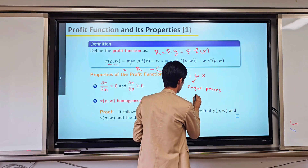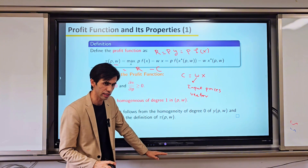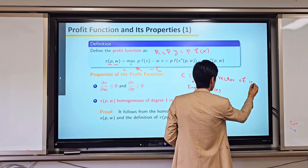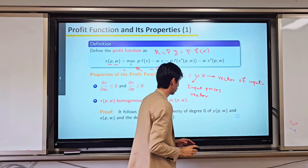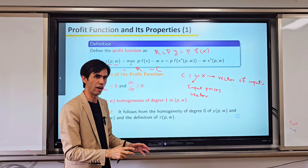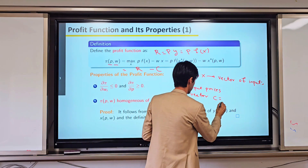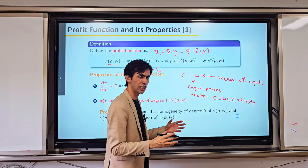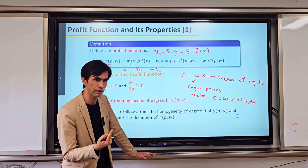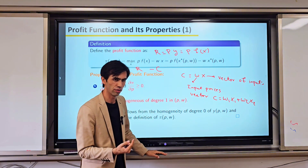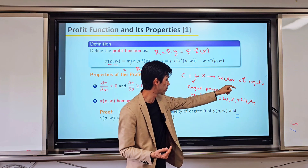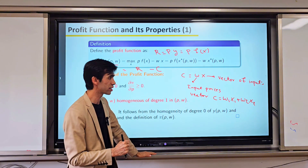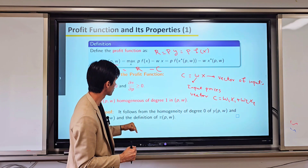Here w is a vector of input prices and x is a vector of inputs. For example, when we have two inputs in our production process, cost takes the format w₁x₁ + w₂x₂. But in general, if we assume we have n inputs, we write it as the vector product w·x, where w is the vector of input prices and x is the vector of inputs. So instead of cost we simply write w·x.